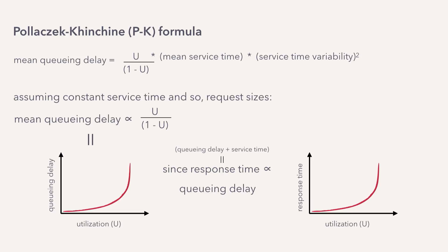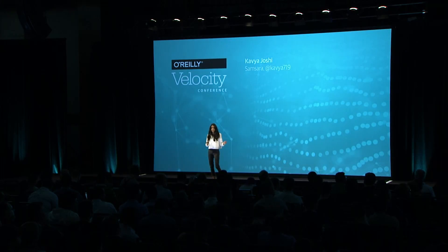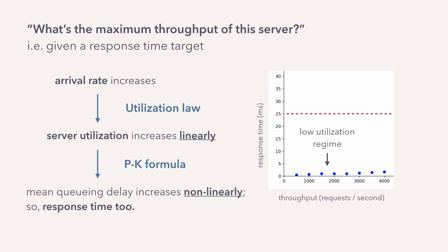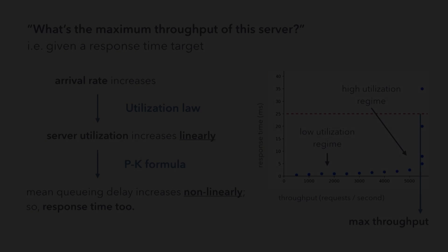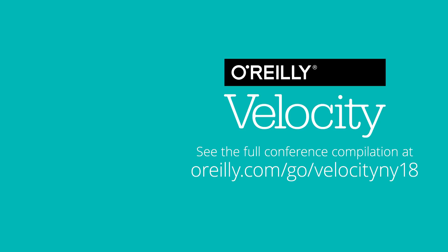Applying this to our question: what's the maximum throughput of the server? As long as we're in the low utilization regime, increasing requests per second keeps response time about the same. But once we're in the high utilization regime and the server is as busy as it can be, increasing the arrival rate means requests start to queue, so response time hockey sticks until it crosses that response time threshold we have. The maximum throughput of the server is the point where that curve meets that line, which is at about 5,500 requests per second.